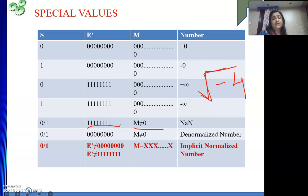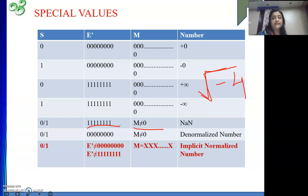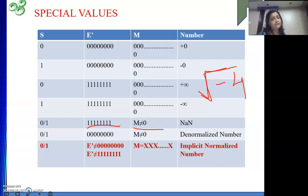The last special value is the denormalized number. E' is all 8 zeros and M is not equal to 0 — for example M had 0011. So all 0 in E' and M not equal to 0 means it is a denormalized number. Apart from these special cases — where E' is not all 0 and not all 1 — M can be anything: all 0, all 1, or any combination. That represents a normal number.